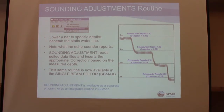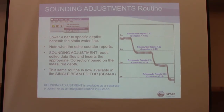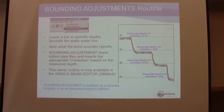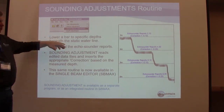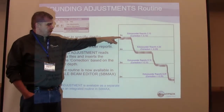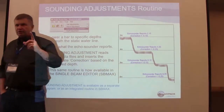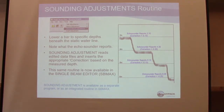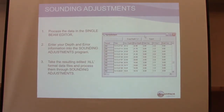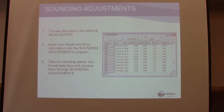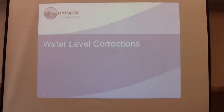In the single beam editor, there's a separate sound adjustment program. While you have the sonar, you drop it to different depths, make an adjustment, and it creates a correction file for sound velocity that you can apply afterwards. Water level corrections: tides, negative up and positive down. There's a formula for correcting negative values when the water is above chart datum.